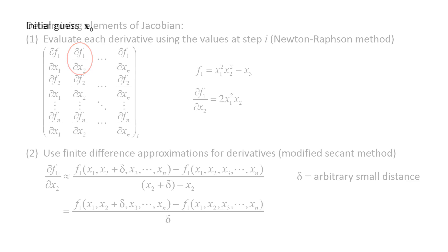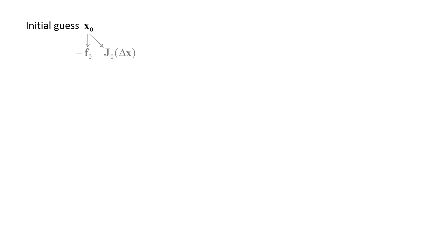Regardless of which method we use to calculate the elements of the Jacobian, we start with initial guesses for each of the n variables, which are stored in the vector x0. We can use these values to calculate the n functions, stored in the vector f0, and calculate the n squared elements of the Jacobian, stored in the matrix j0.